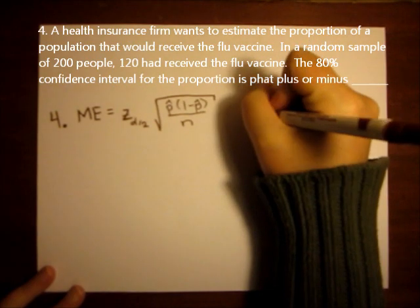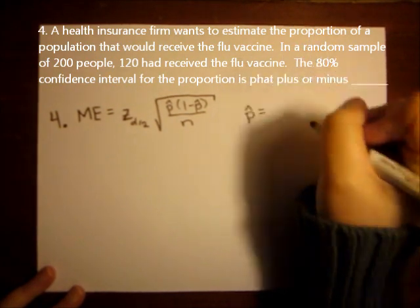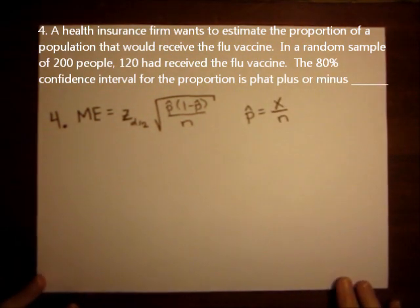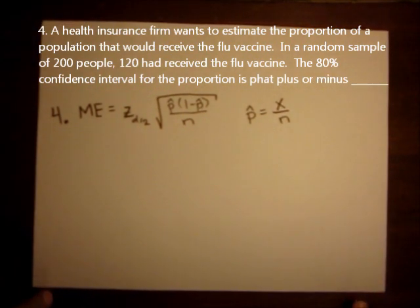Where, of course, p hat is the sample proportion of successes. So it's x over n, the number of successes divided by the number of trials.